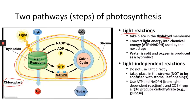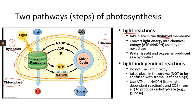Inside the chloroplast, besides the thylakoid, you have the rest of the space filled with fluid called the stroma. So inside the chloroplast you have the thylakoid and the stroma. The first step happens in the thylakoid — you make ATP and NADPH. And in that process, water is split, and when water is split, oxygen is produced.